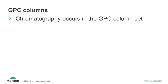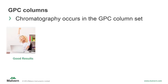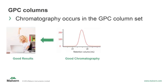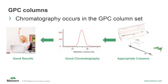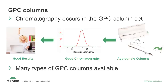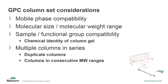Which brings us to GPC columns. The chromatography process we've discussed occurs inside of the GPC column set. Good results come from good chromatography, for which you need the appropriate GPC columns. There are many types of GPC columns available to fit your sample needs. Some common factors to consider when choosing a GPC column set include mobile phase compatibility, which is generally the primary concern; molecular size and molecular weight range; compatibility with your sample or functional groups present on your sample; and how many columns of which type to use — multiple columns of the same type to increase resolution, or columns in consecutive molecular weight ranges to expand the resolution range.